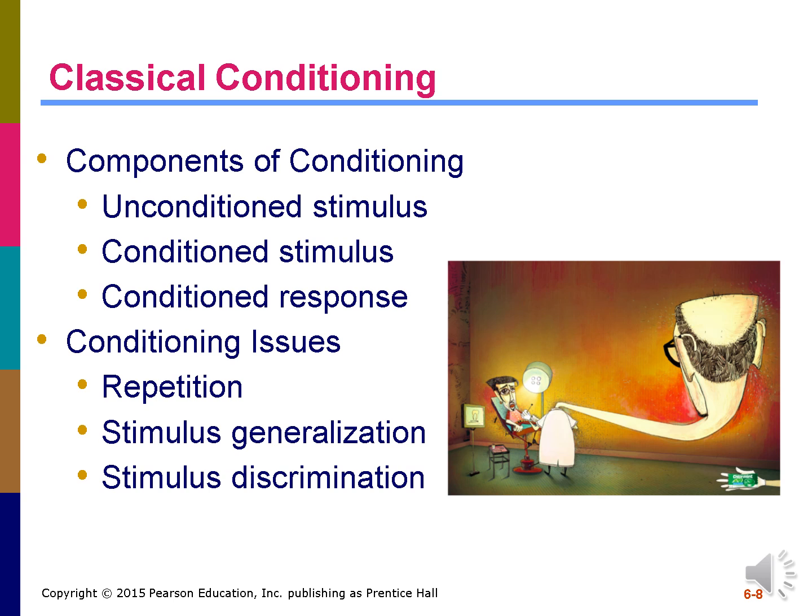The effects of classical conditioning are more likely to occur after the conditioned and unconditioned stimuli have been paired a number of times — an effect known as repetition. Stimuli similar to a conditioned stimulus may evoke similar responses, which is known as stimulus generalization. Conditions may also weaken over time, especially when an unconditioned stimulus does not follow a stimulus similar to a conditioned stimulus. This is called stimulus discrimination.